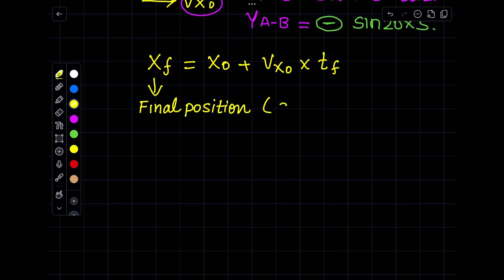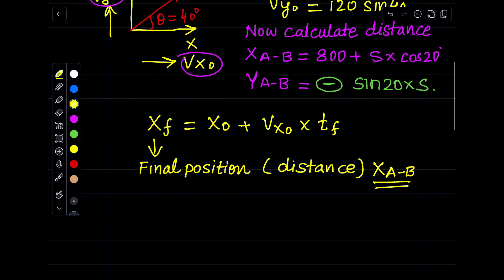So XF is the total distance it will travel, that is XA-B, and we have just calculated above. So we will write the values here for XF, that is 800 plus S multiplied by cos 20°.